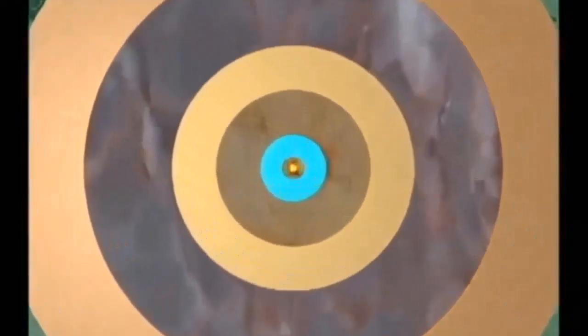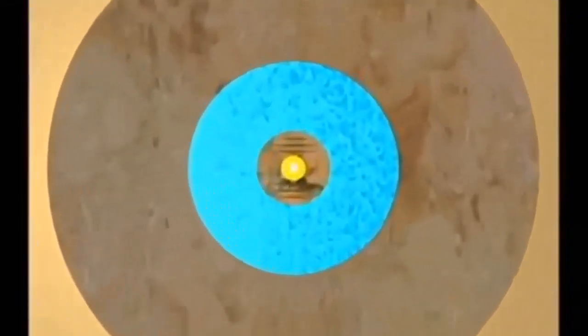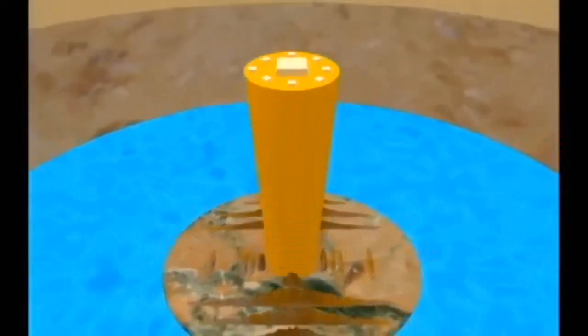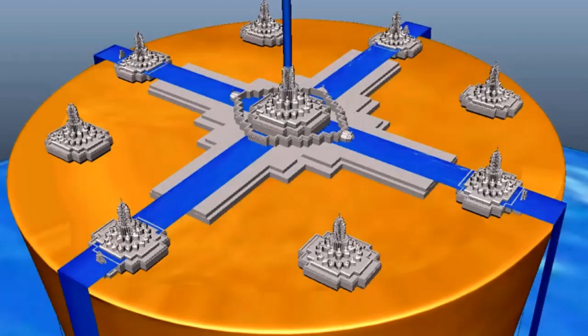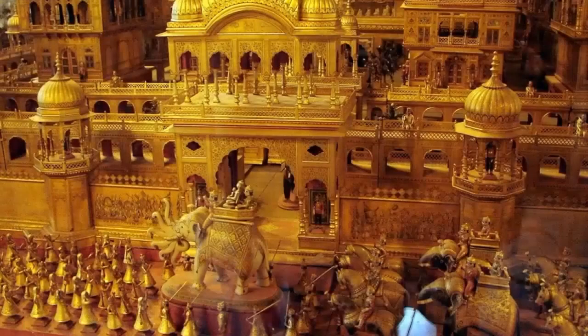In the centre of Bhumandala is Mount Meru, which sits at the centre of the mountainous island of Jambudvipa. Meru's height is nearly 800,000 miles above Jambudvipa. On the top of Meru, we find an abode for Lord Brahma, and cities of the gods lie in eight directions.